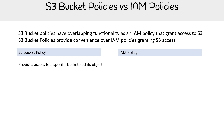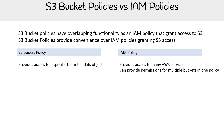With an S3 bucket policy, it provides access to a specific bucket and its objects, whereas an IAM policy provides access to many AWS services and can provide permissions for multiple buckets in one policy. So if you're working with lots of buckets, an IAM policy makes more sense.